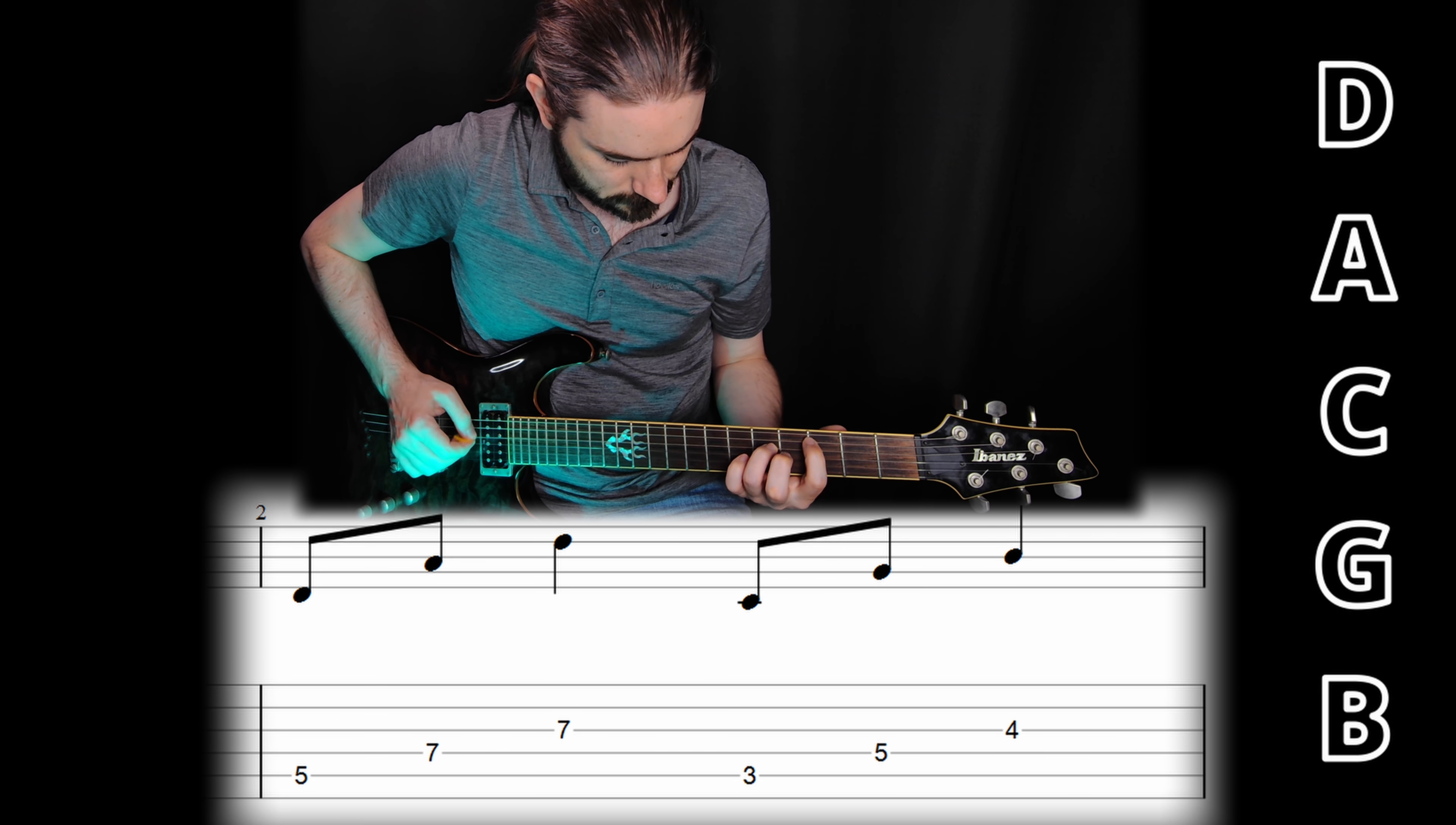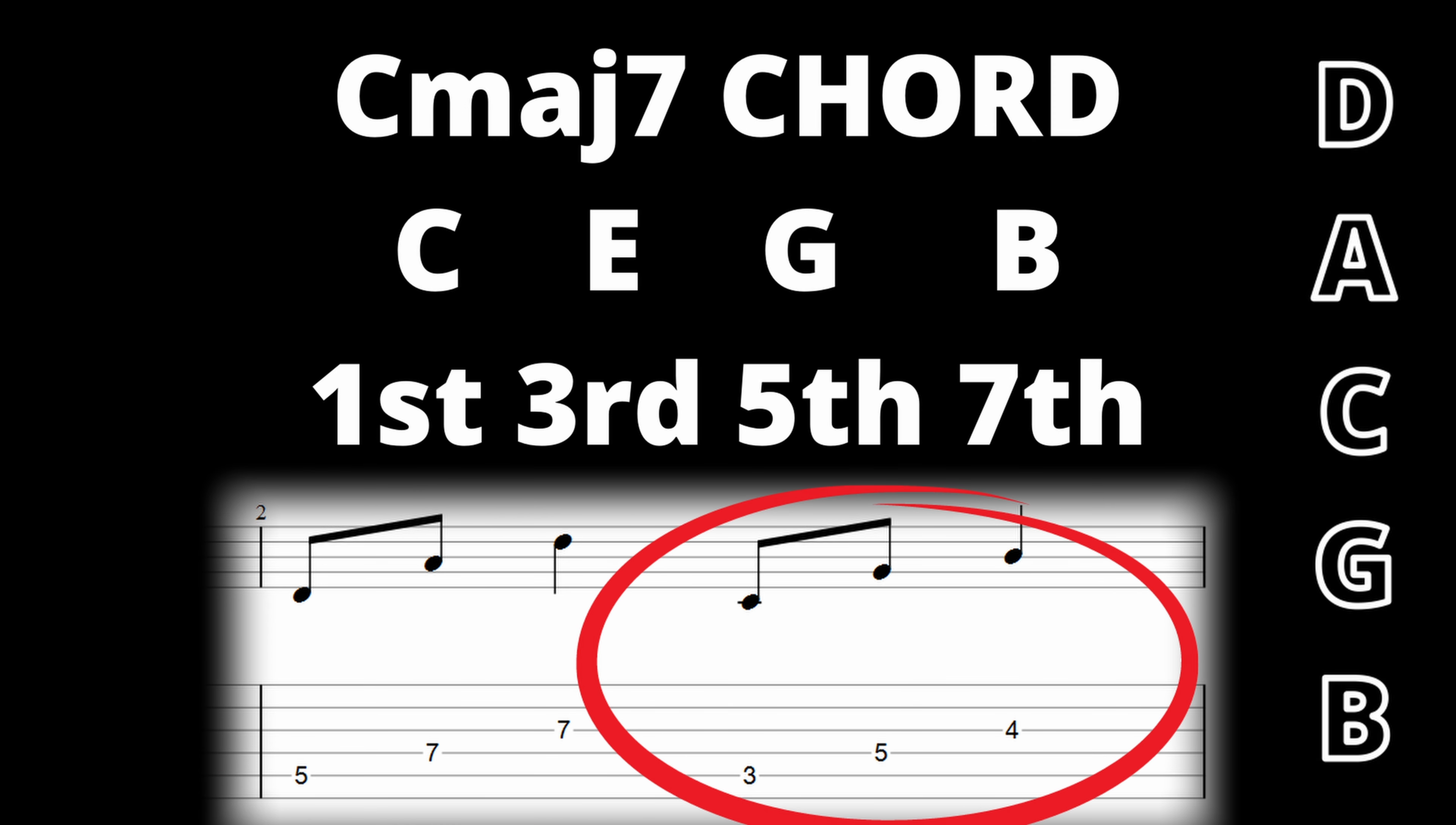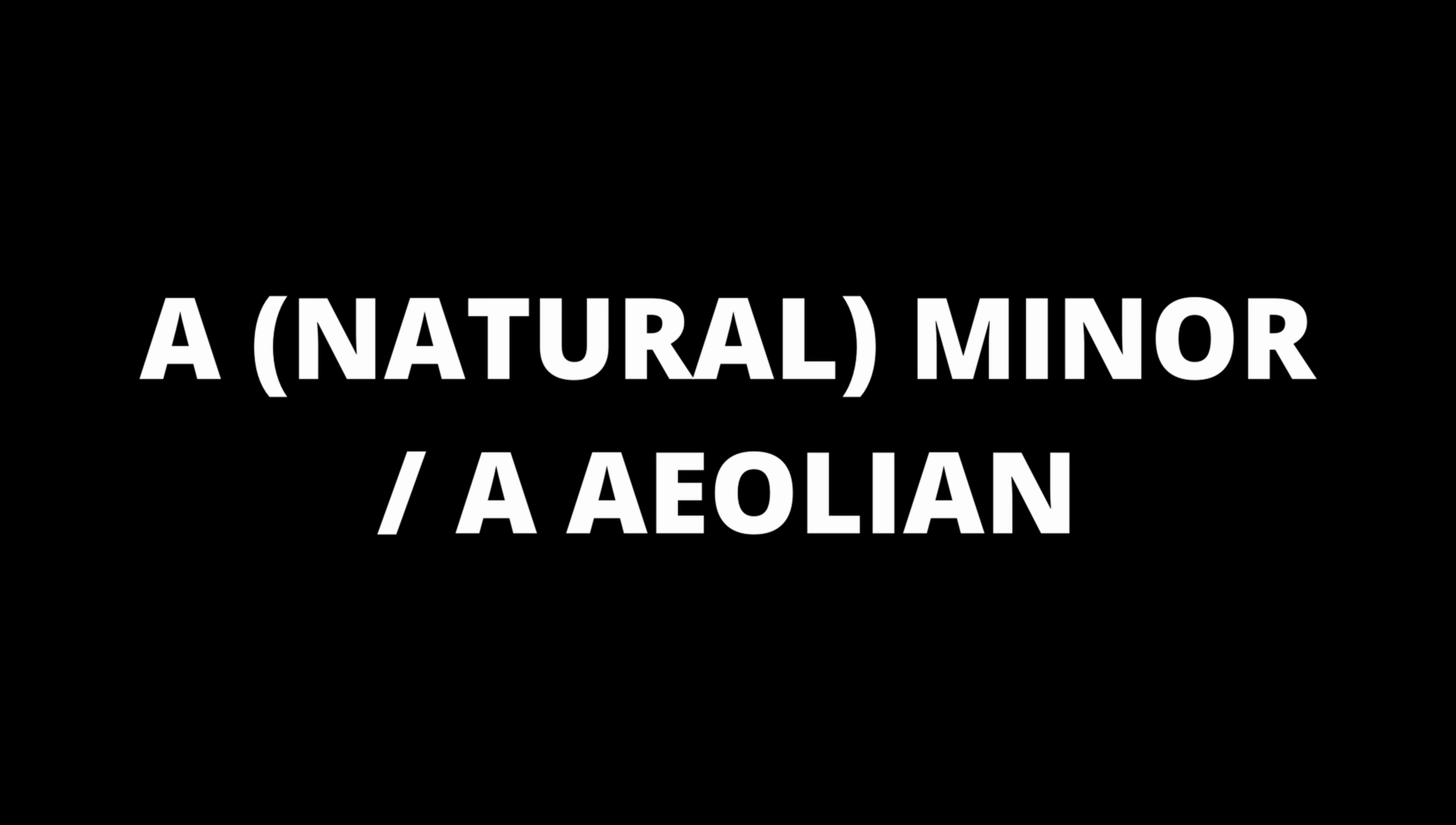On to bar two now. This bar uses the notes D, A, C, G, and B - exactly the same notes as bar one, but in a different order. The bar is split into two phrases. The first three note phrase uses D and A notes, creating a D5 power chord. The next phrase uses C, G, and B notes - the first, fifth, and seventh notes in a C major seventh chord. The riff then repeats with one difference: the final note in bar four is changed from B to an open G, making the final arpeggio a C power chord. It's worth noting that the intro riff contains no accidentals, pointing us towards the key of A minor.